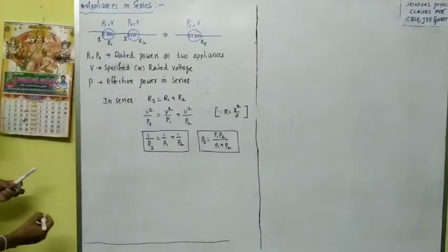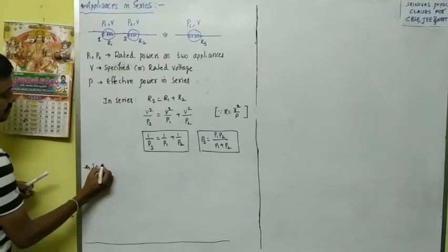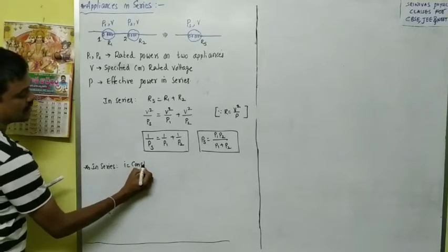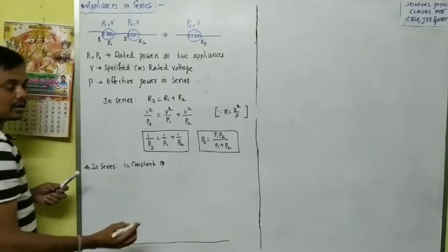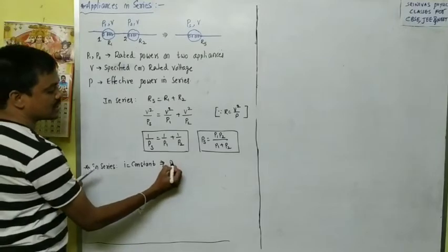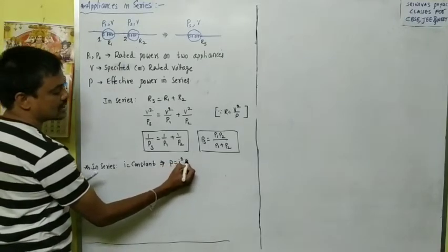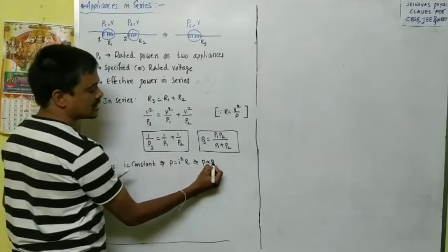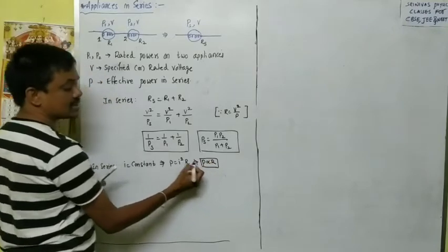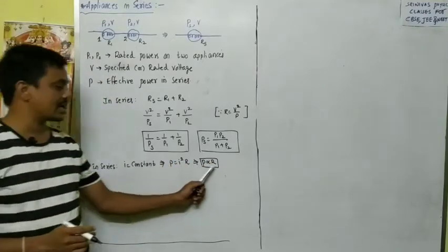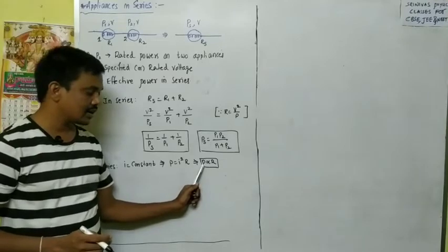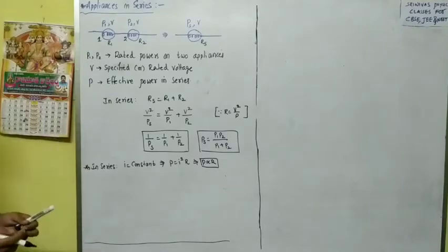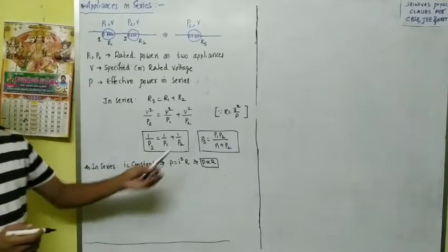In series, current is constant. We use the formula P = I²R. Power is proportional to resistance. The appliance which has higher resistance consumes more power and glows more. This is about series combination and effective power in series combination.